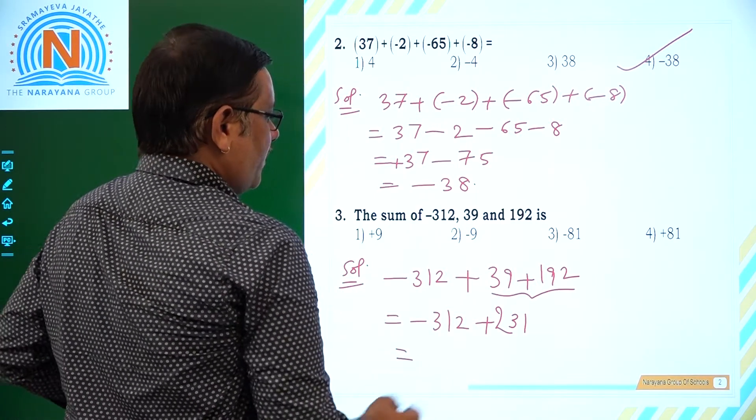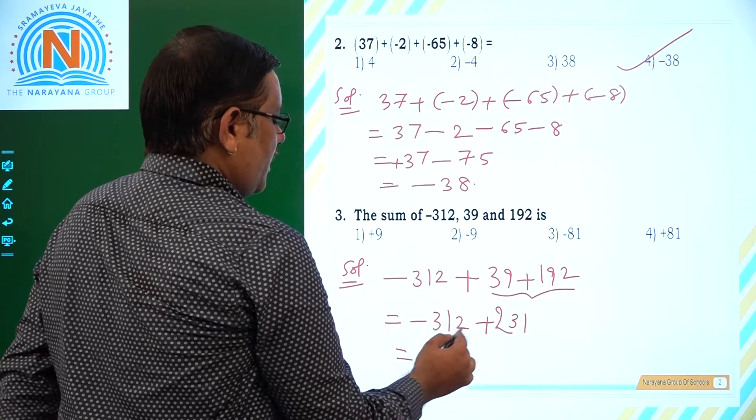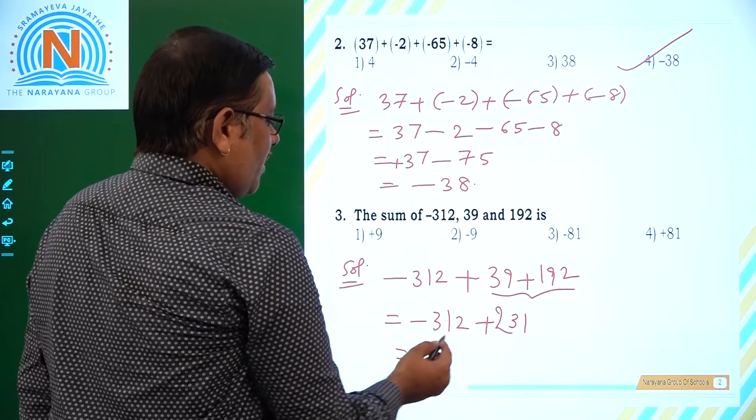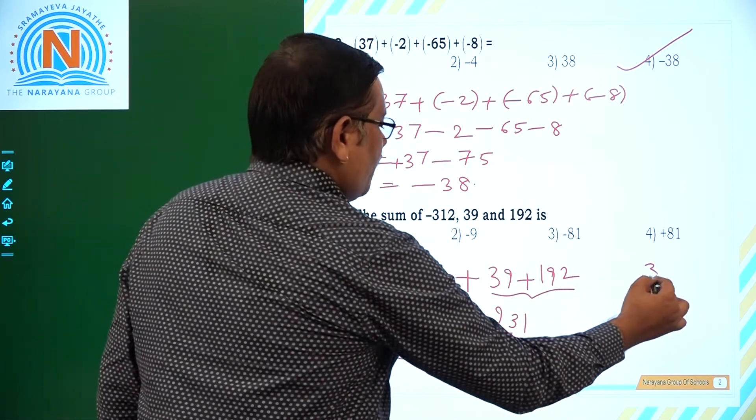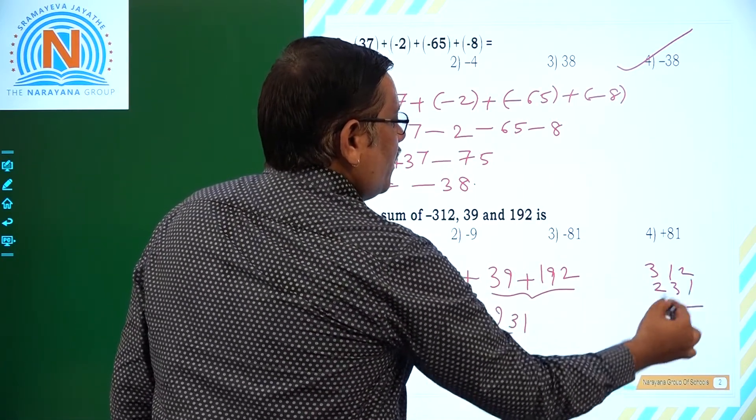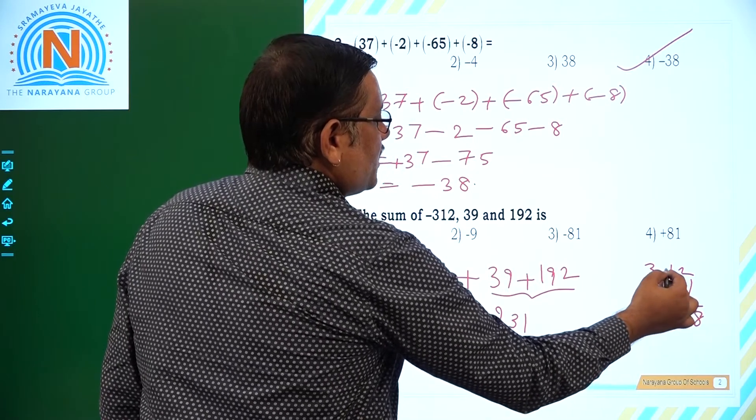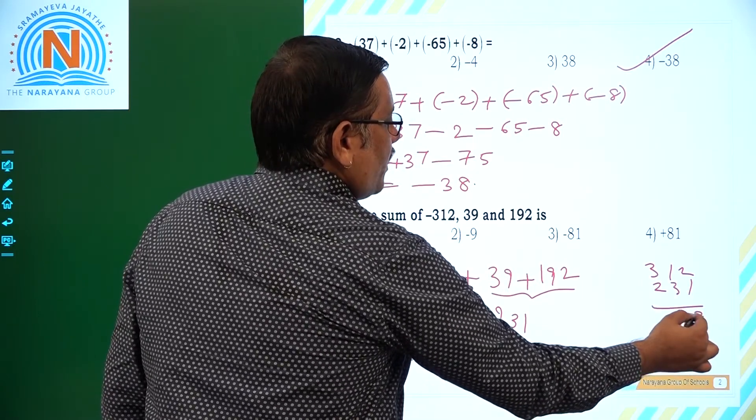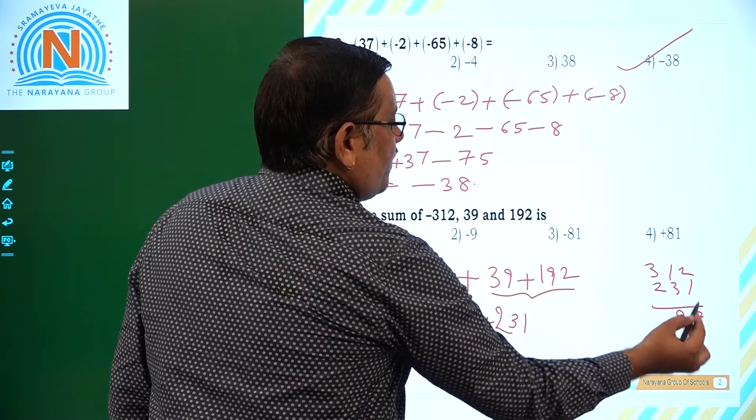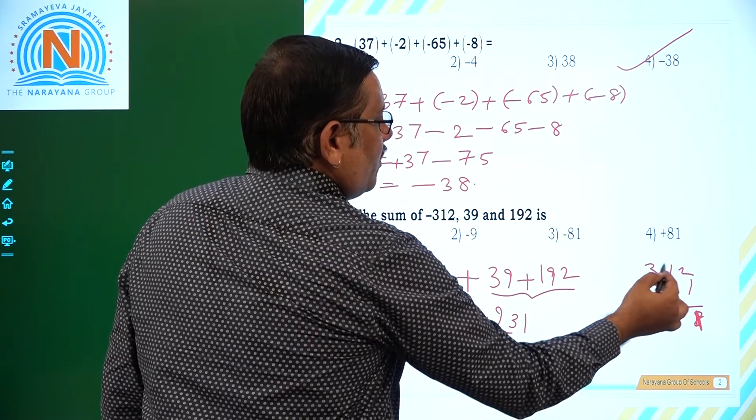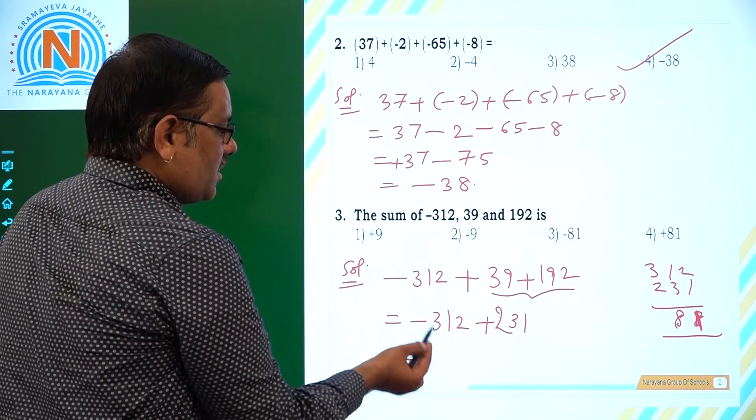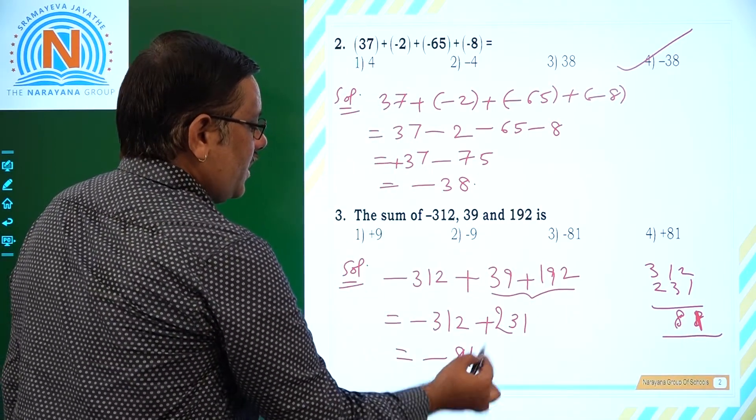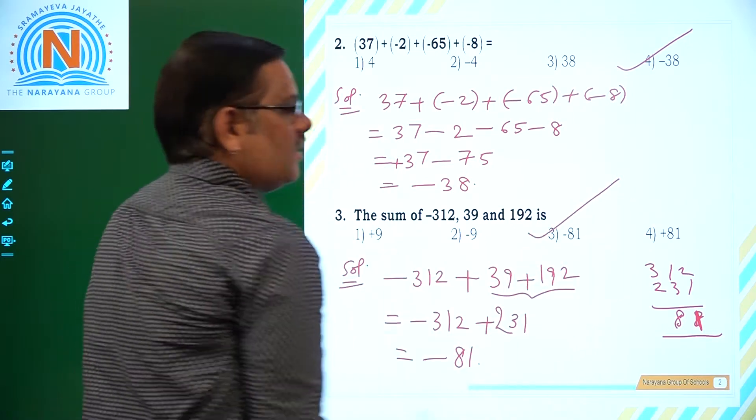So that is otherwise -312 + 231. What to do now? One is minus, one is plus. Subtract. 312 is larger number. From 312 subtract 231. So what do you get? 2 minus 1, that is 8. That is 11 minus 3. This is 1. This is 81. So 2 minus 2 will be 0. 81. But 81 means here larger number has negative sign. So that is -81. -81 is nothing but third option.